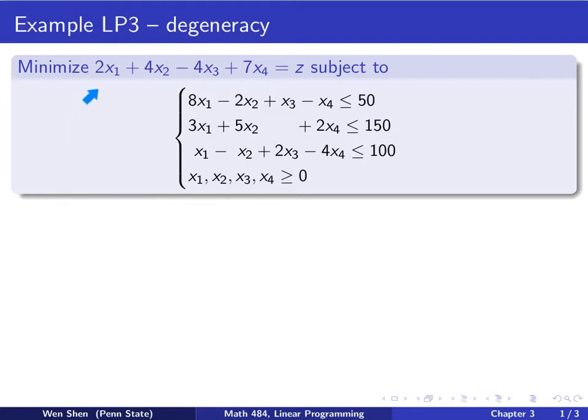We want to minimize this function subject to this set of constraints. So we see that the constraints are not in standard form. They have inequality instead of equality, and we still need to put it in canonical form as well.